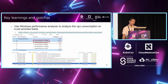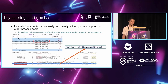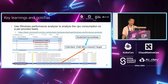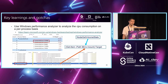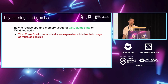When we clicked on the details, we found that process 15096 was repeatedly calling the command 'Get-Item'. After investigation, we found the root cause was NodeGetVolumeStatus, because for every volume mounted on the node it calls this PowerShell command once every minute. With lots of volumes mounted, the frequency of these PowerShell calls becomes very high. We learned that PowerShell command calls are expensive and we need to minimize their usage as much as possible, which could reduce the CPU and memory usage of NodeGetVolumeStatus on Windows nodes.